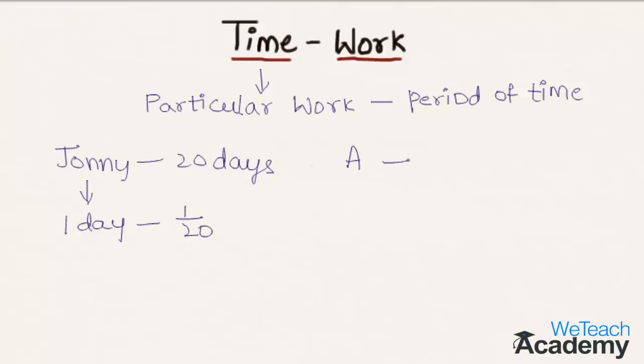We can say that if A can do a piece of work in n days, then his one day work would be the nth part of the work, that is 1/n.